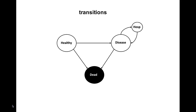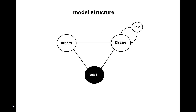Individuals in the state healthy are each year subjected to risks to develop the disease and transit to the state disease, or to die and transit to the state dead. Individuals in the state disease are subjected to the risk of dying and to get hospitalized. Those who are hospitalized return to the state disease during the same cycle, since one cycle equals one year and hospitalization is modeled to be shorter than one year. Notice that there is no chance for individuals in the disease state to return to the healthy state.